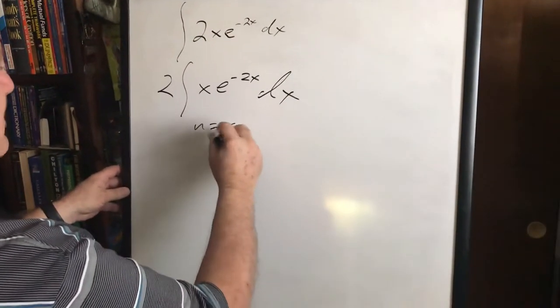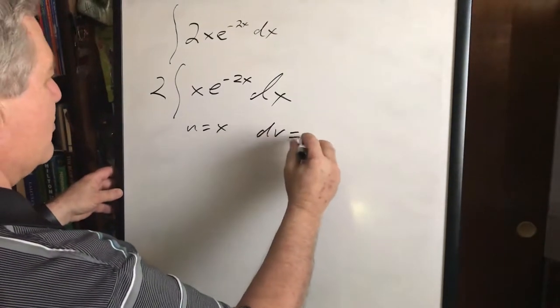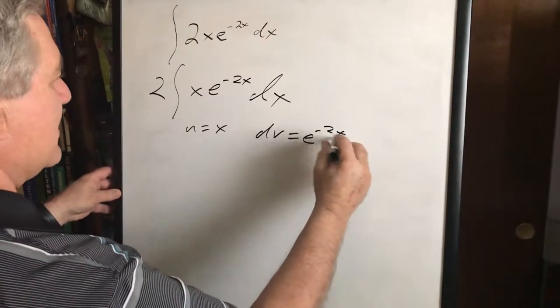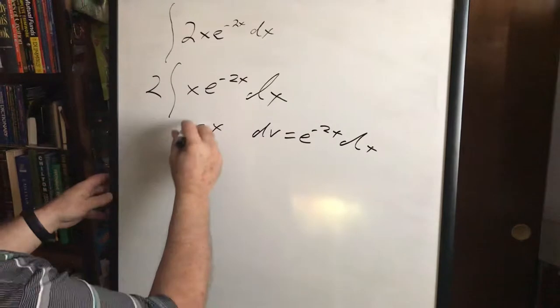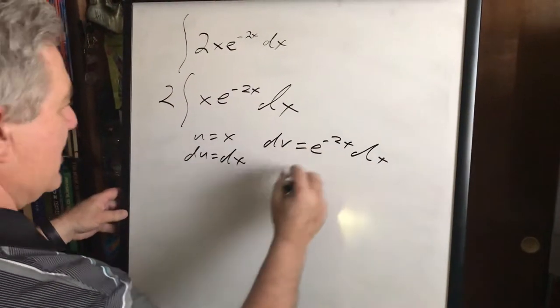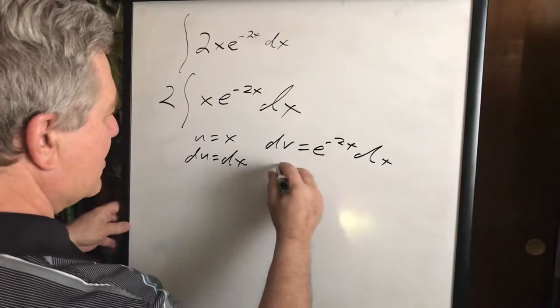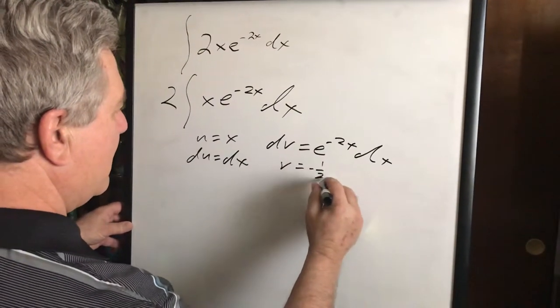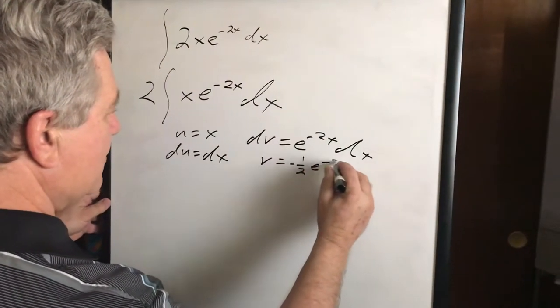You say u equals 2x, dv equals e to the negative 2x dx. Then you take the derivative of that, that becomes du equals dx. And v is just equal to the integral of that, and that's v equals negative one half e to the negative 2x.